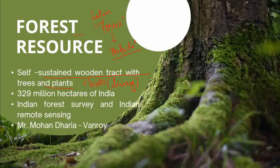There are 3 to 9 million hectares of land. About 19.48% of the land is covered with forest. Around 63.85 million hectares of forest is covered in India.